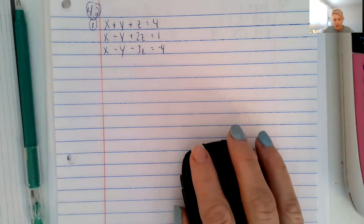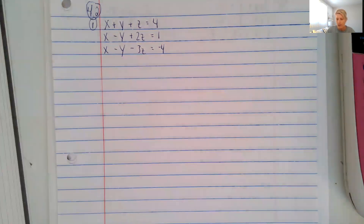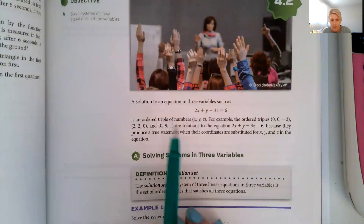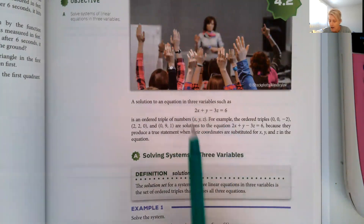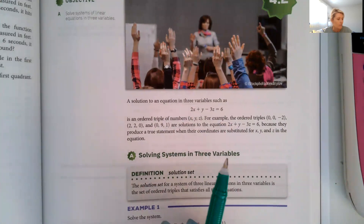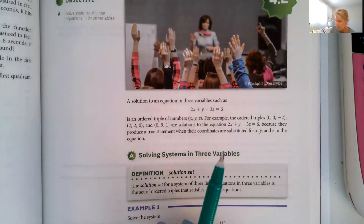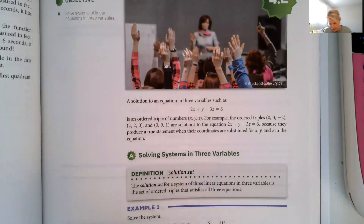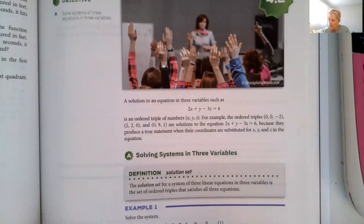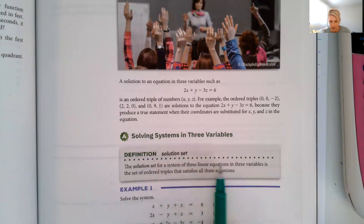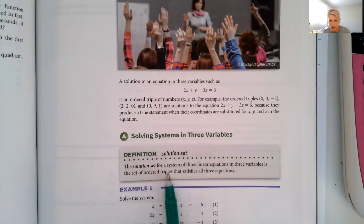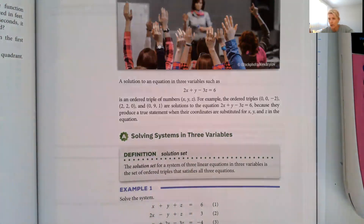So now 4.2 is we're going to talk about a system of linear equations in three variables, such as this example here: 2x plus y minus 3z equals 6. It actually becomes more understandable when we put it in a context of some real life situations, which we'll do in the next lesson. We talk about a solution set — the solution set for a system of three linear equations in three variables is the set of ordered triples that satisfy all three equations: an x, y, and z that make all three equations true.